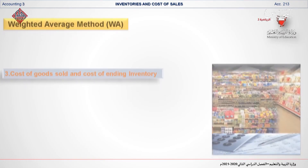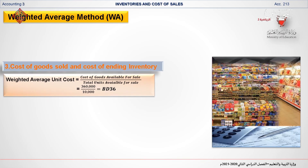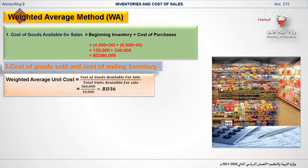In requirement number 3, calculate the weighted average unit cost using the formula: cost of goods available for sale divided by total units available for sale. That is 360,000 divided by 10,000, and the weighted average unit cost is 36 BD.